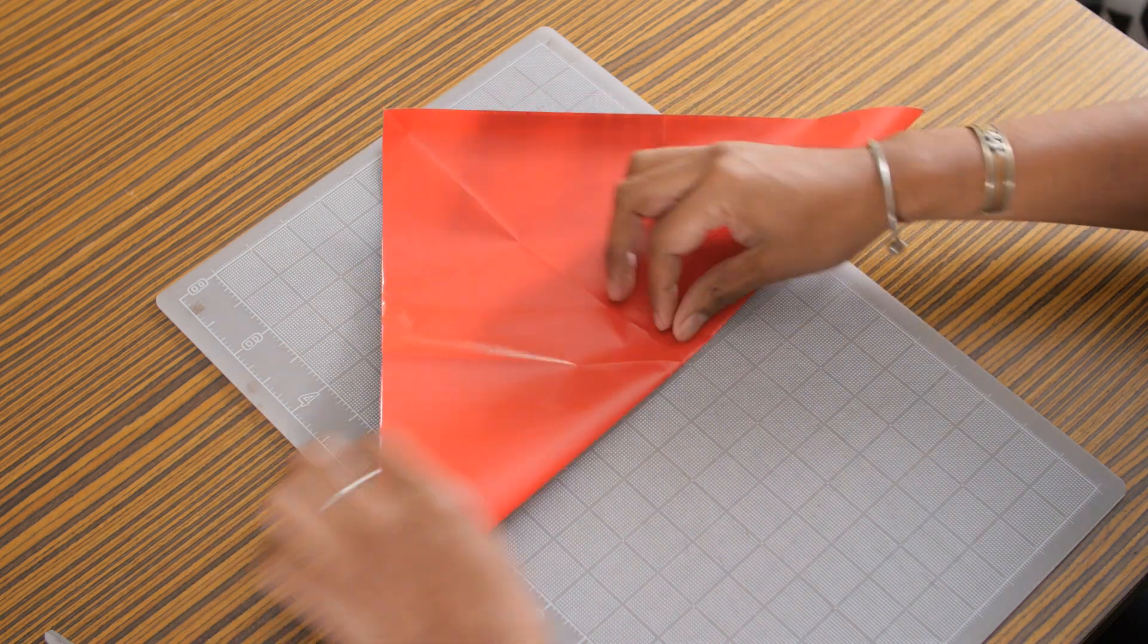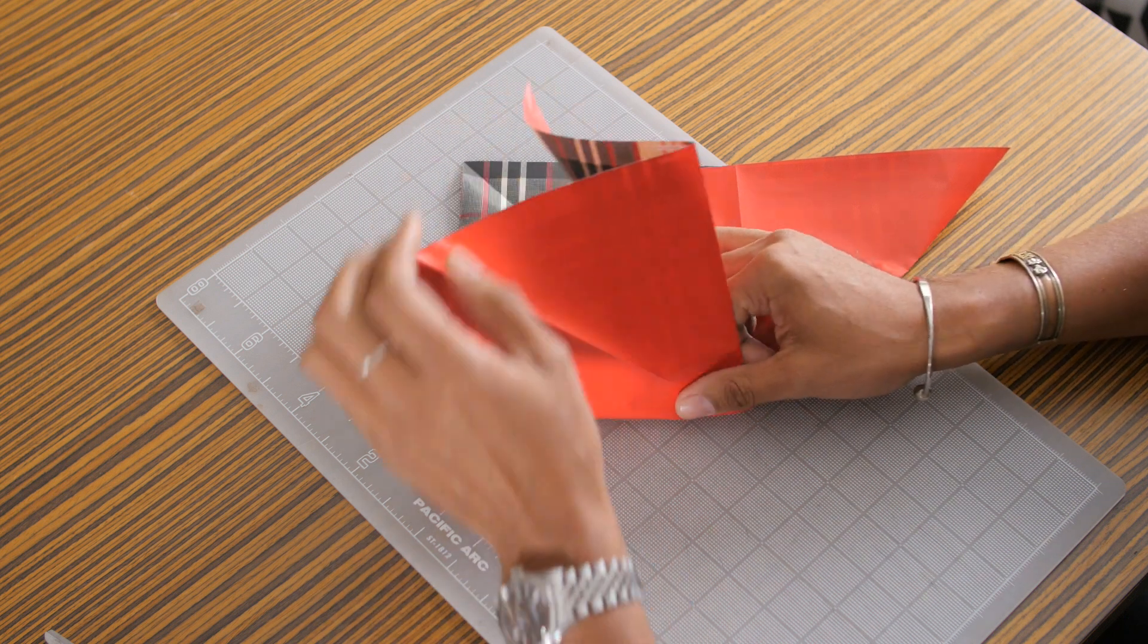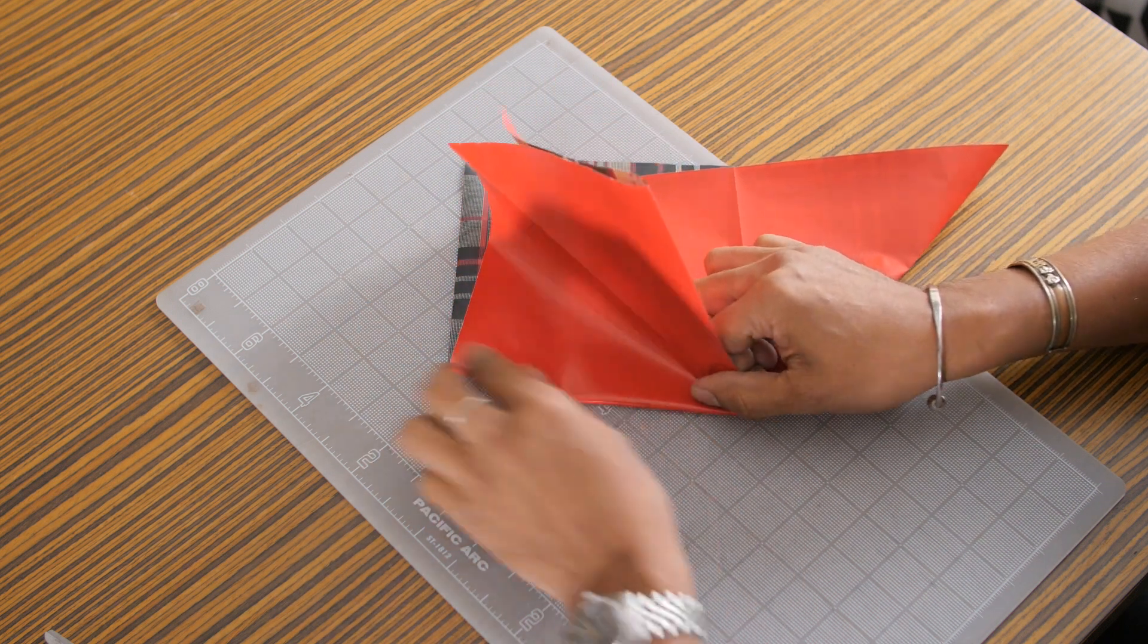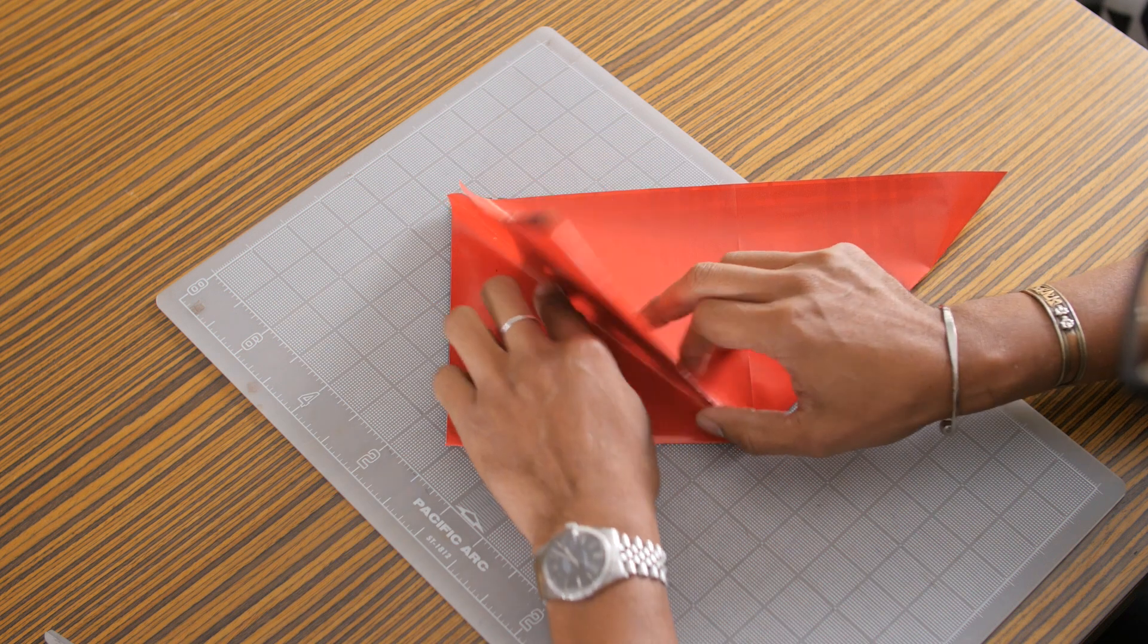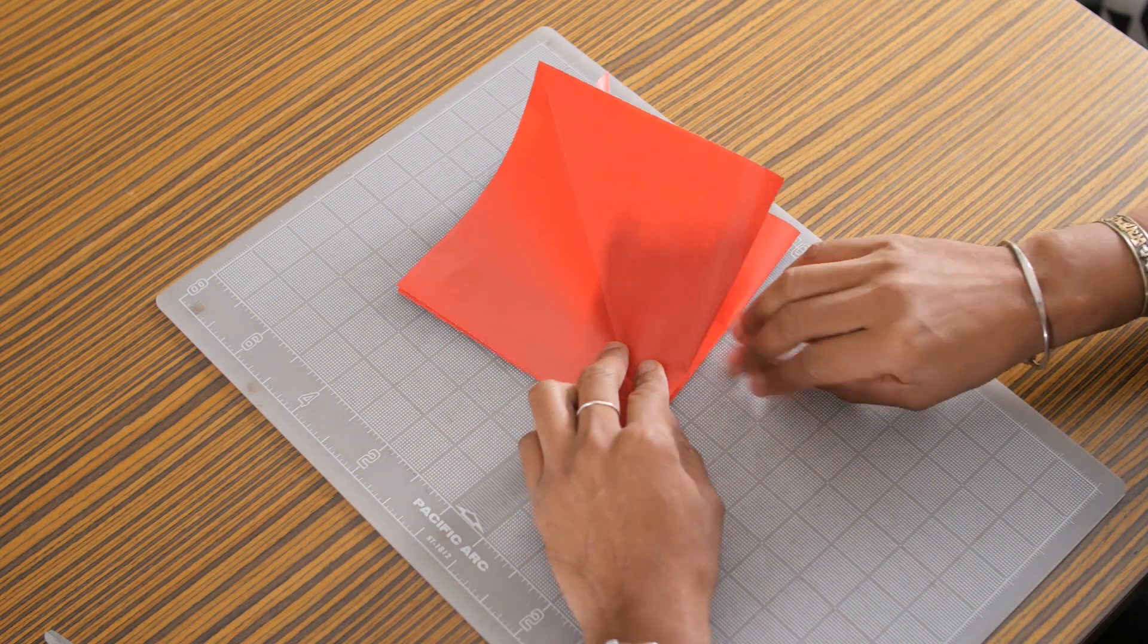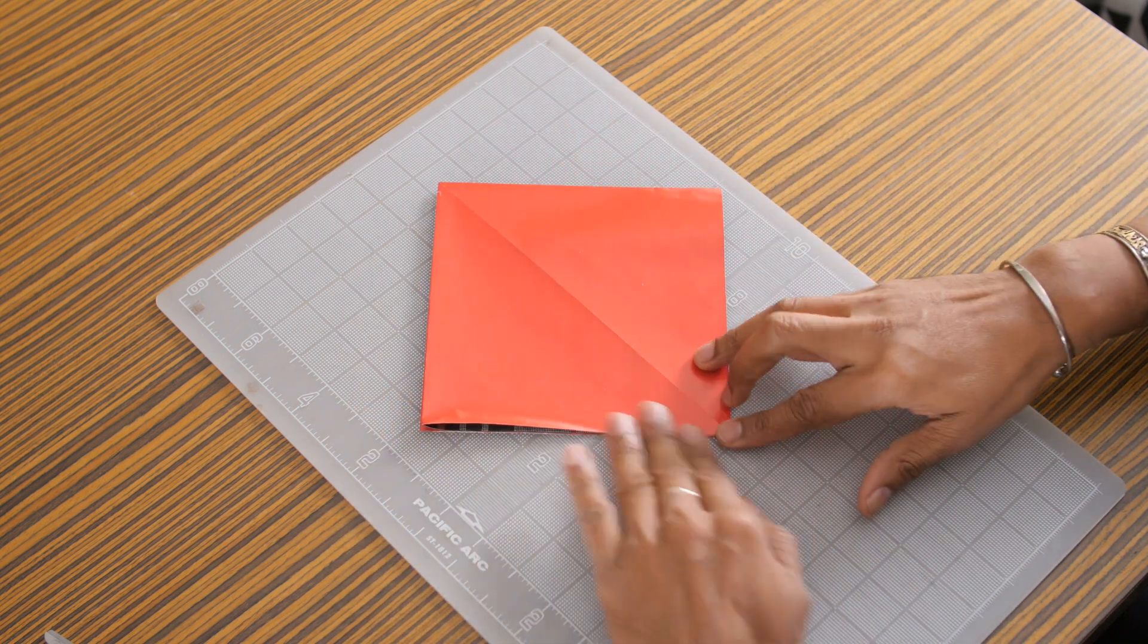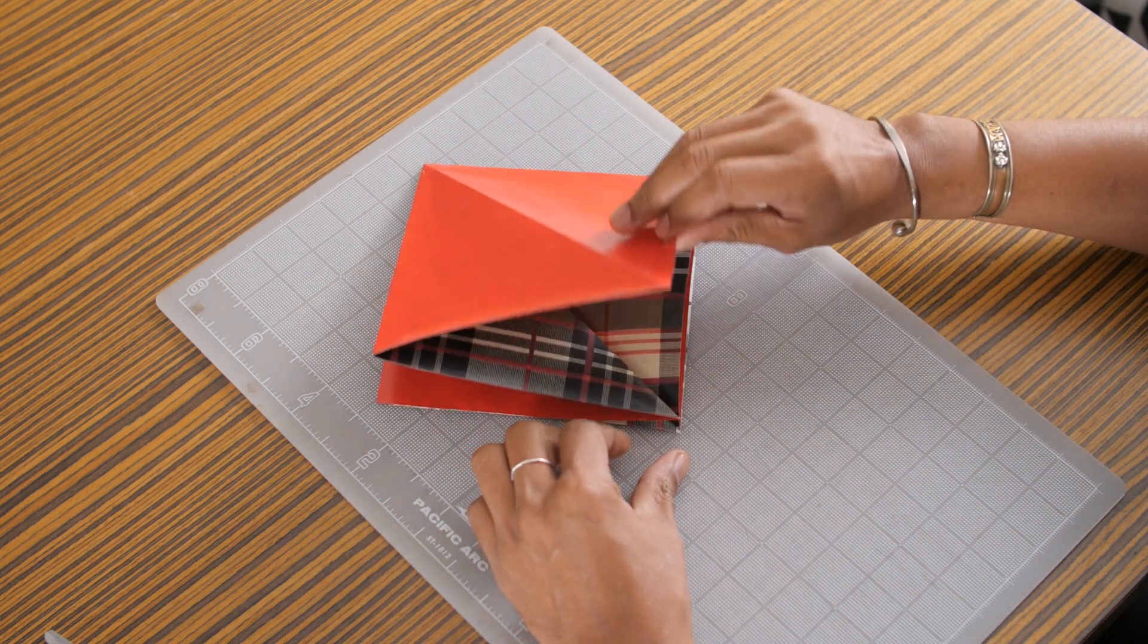Now refold back into the original triangle shape and then we're going to do what's called an inverse fold. That means you're going to take one of the corners of the triangle tuck it in and fold an inverse of that crease. And you'll do the same for the other side. Now rotate it around so that the opening is facing towards you like this.